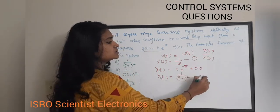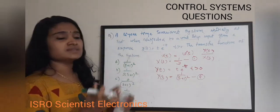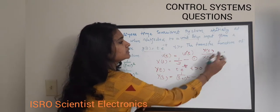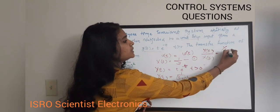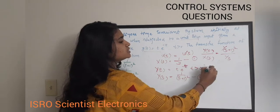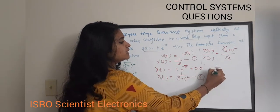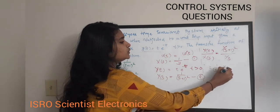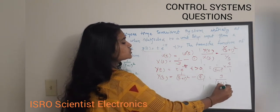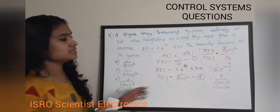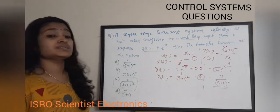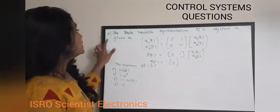Substituting the values: Transfer function = Y(s)/X(s) = [1/(s+1)²] / [1/s] = [1/(s+1)²] × (s/1) = s/(s+1)². So the correct answer is option C: s/(s+1)². This is the transfer function of the given linear time-invariant system.